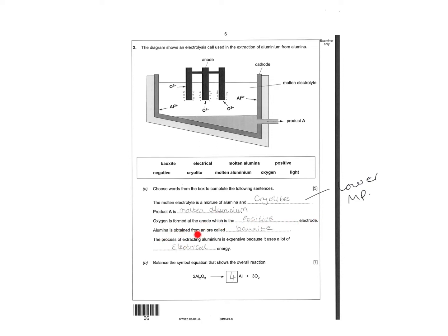The product they make is molten aluminum. Oxygen is formed at the anode which is the positive electrode. Aluminum is obtained from an ore called bauxite. The process extracted aluminum is expensive because it uses a lot of electrical energy. Balance the simple equation that shows the overall reaction, so two times two would be four, so there's four aluminum.